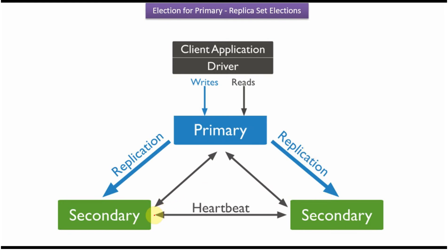Secondary servers are communicating using heartbeat, so using that heartbeat one secondary server can identify whether another secondary server is alive or not. The client application will communicate to the primary server for write operations and read operations.